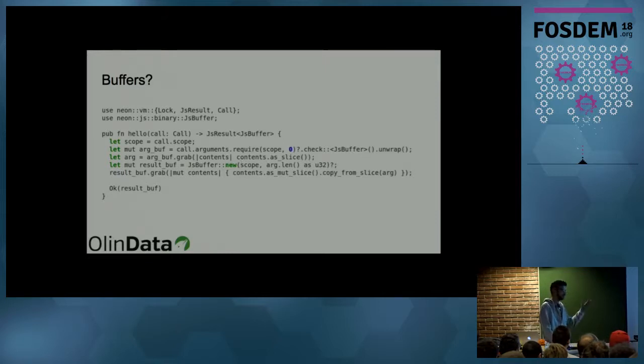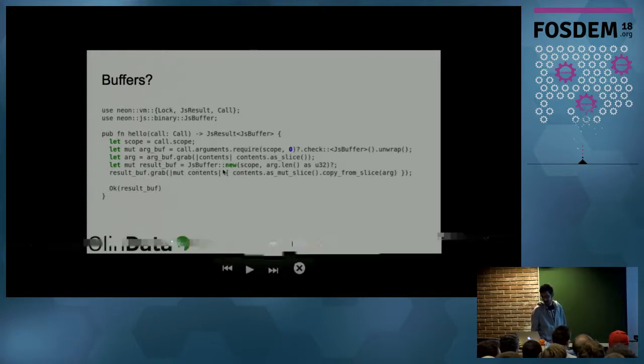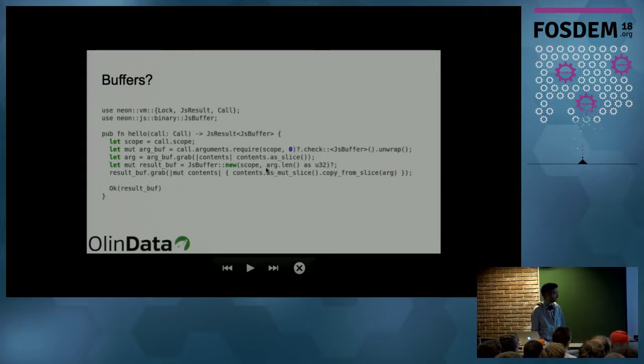So this .grab takes care of that. And then in here, you can get the data or mutate the data. So in this case, we are converting to a slice. And then, so just for this example, I should also show that how to create a new buffer. So it's quite easy. You just pass the scope and then the length. So in this case, I wanted to just copy this buffer that the function was called. So in this case, we just get the size of it.